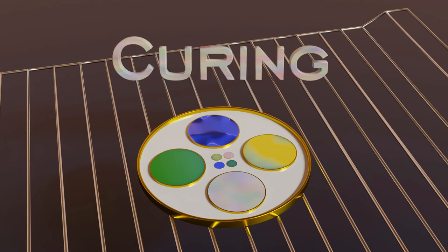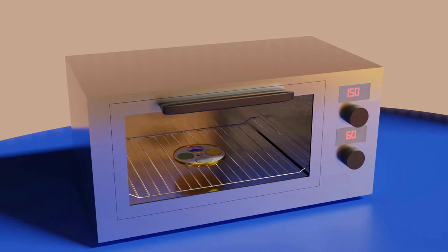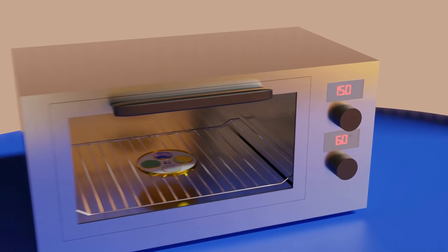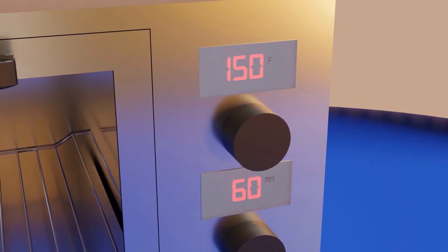Curing requirements will vary slightly depending upon whether you are working with low or high viscosity catalyst. With low viscosity catalyst, heat to 150 degrees Fahrenheit or 66 degrees centigrade for one hour. If working with high viscosity DuraNamel, heat to 130 degrees Fahrenheit or 54 degrees centigrade for three hours.